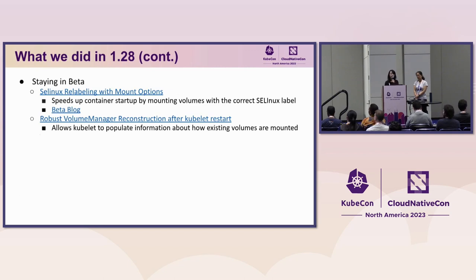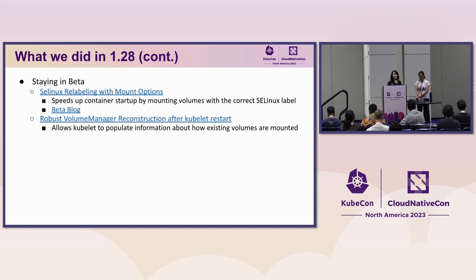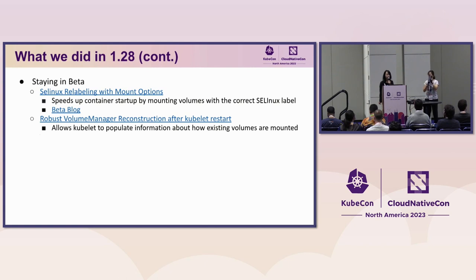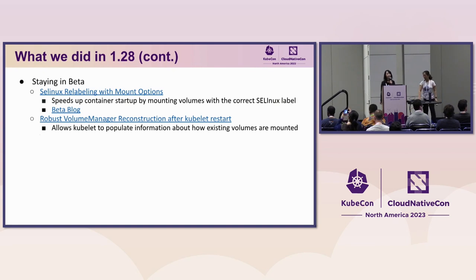We also have features staying in beta where we made some bug fixes in 1.28. The first one is SELinux relabeling with mount options, where we try to mount volumes with the correct SELinux context to speed up pod startup time. The second feature in beta is robust volume manager reconstruction, a code refactor of the volume manager that allows kubelet to provide additional information on how existing volumes are mounted so that we can properly rebuild and clean up after kubelet restart.